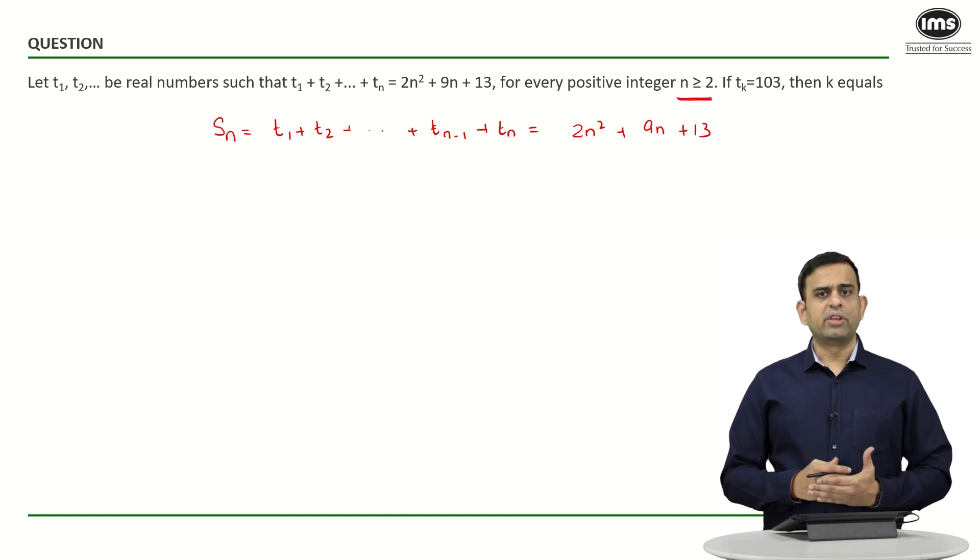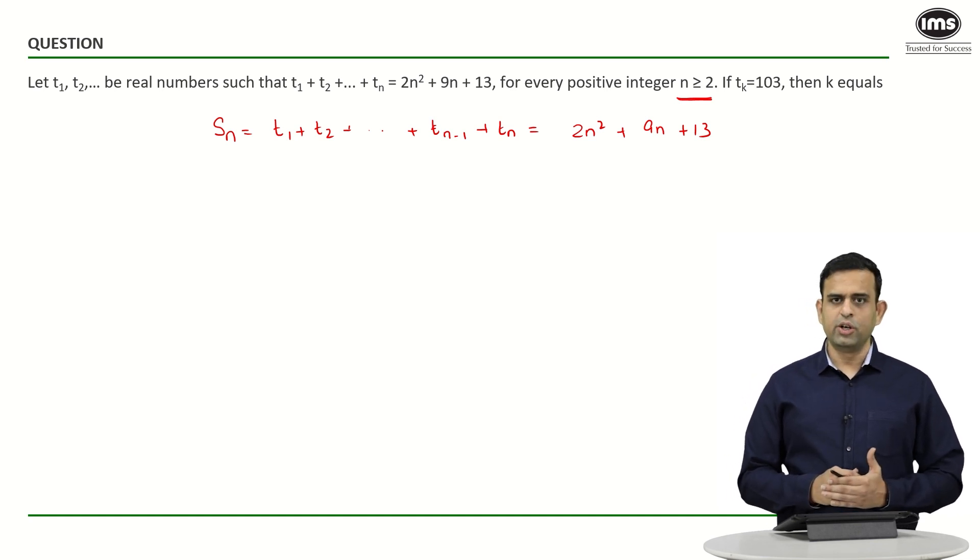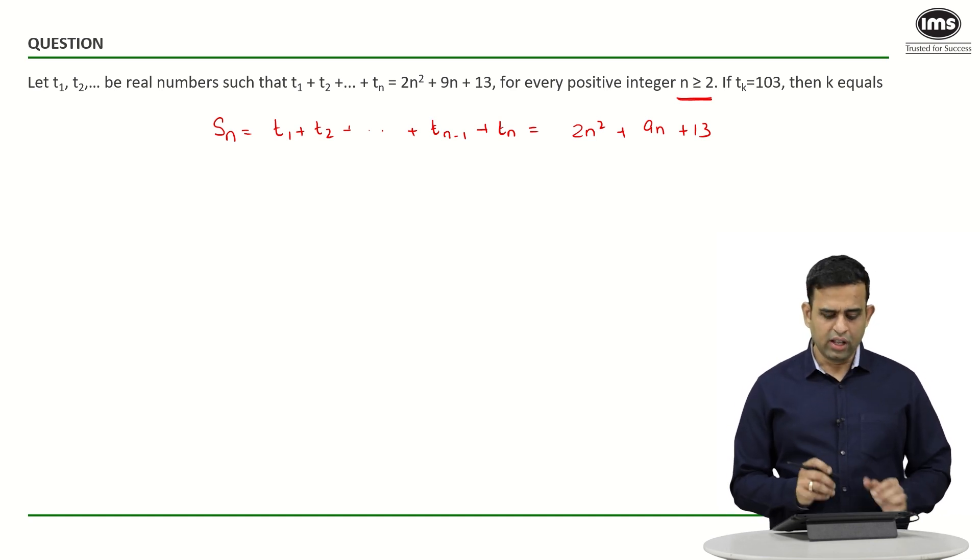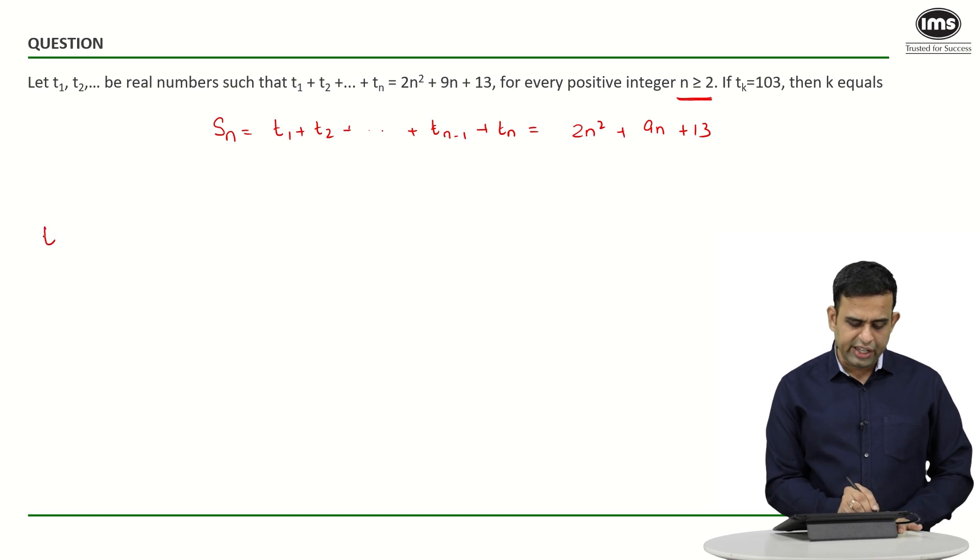Now if I can find out the nth term and equate that tₙ to be equal to 103, we can easily find that value of n. So what I can do is, to find tₙ, tₙ is nothing but equal to Sₙ minus S_(n-1).